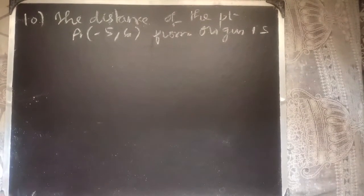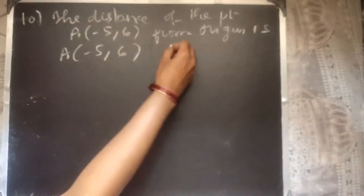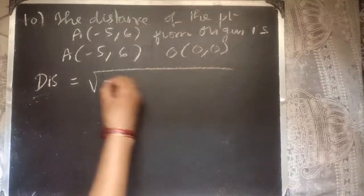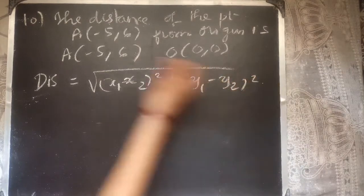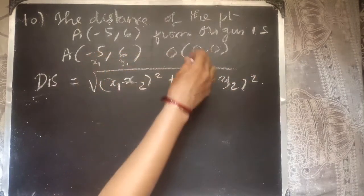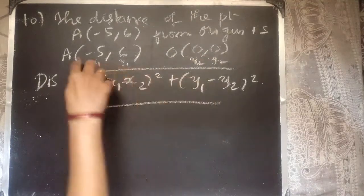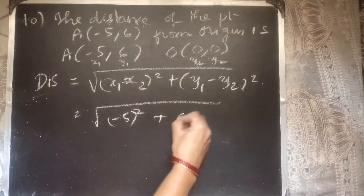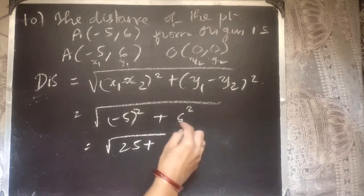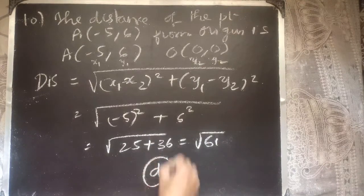The distance of point A(−5, 6) from the origin is. Using the distance formula: √((x1−x2)² + (y1−y2)²) with origin (0, 0), we get √((−5−0)² + (6−0)²) = √(25 + 36) = √61. Therefore option D is the correct answer.